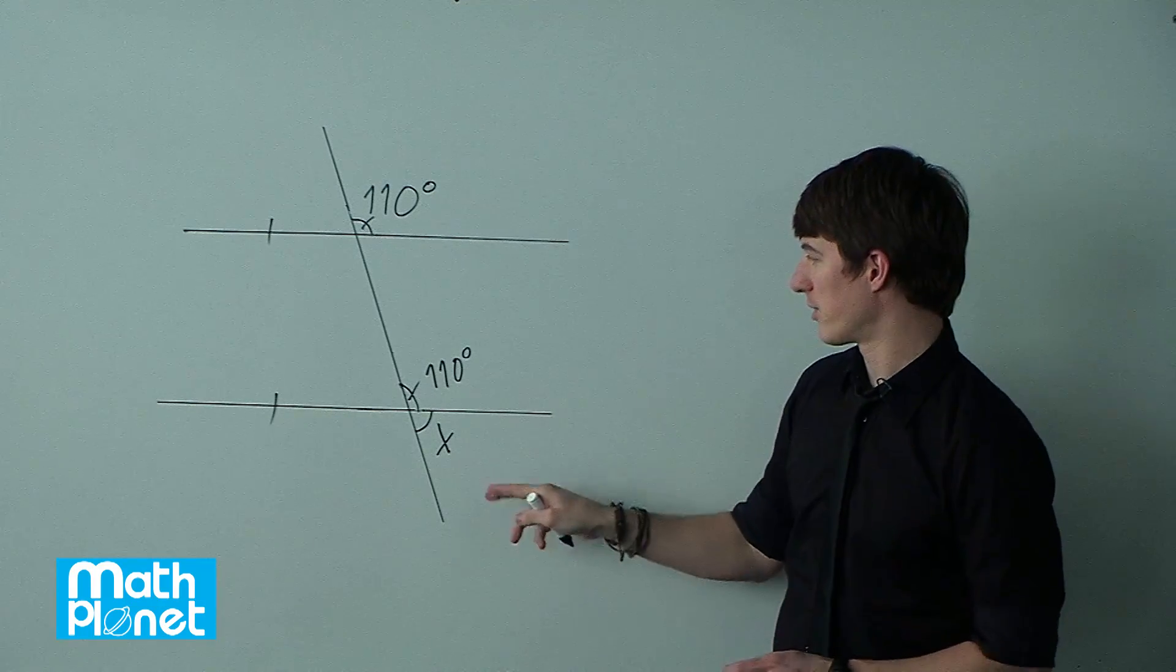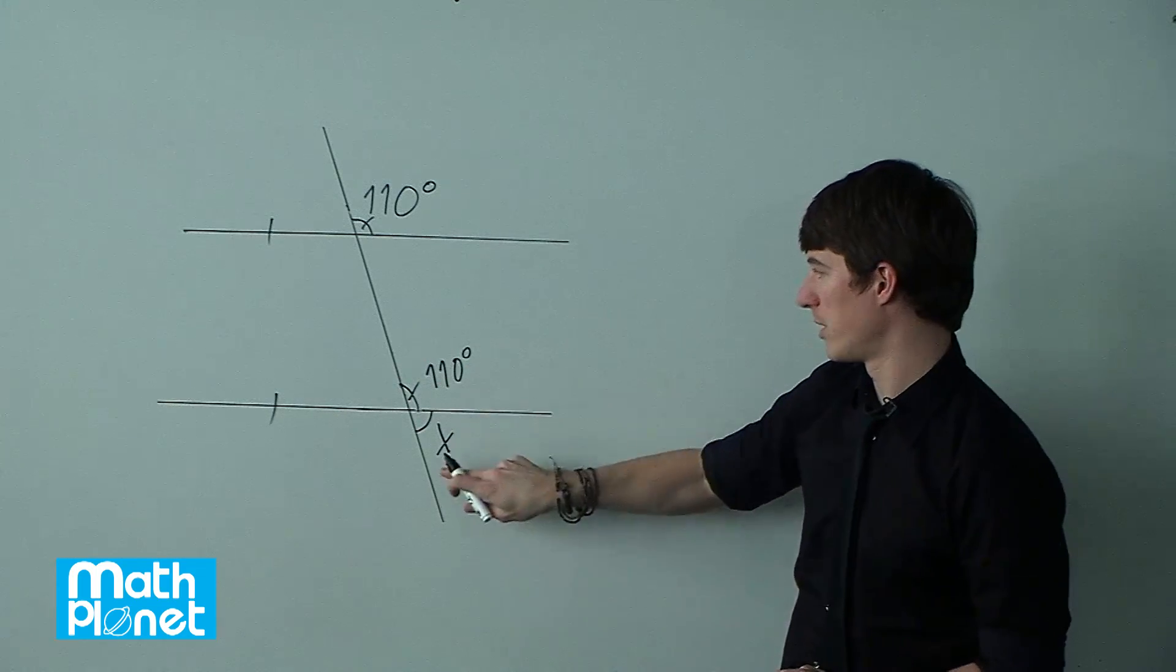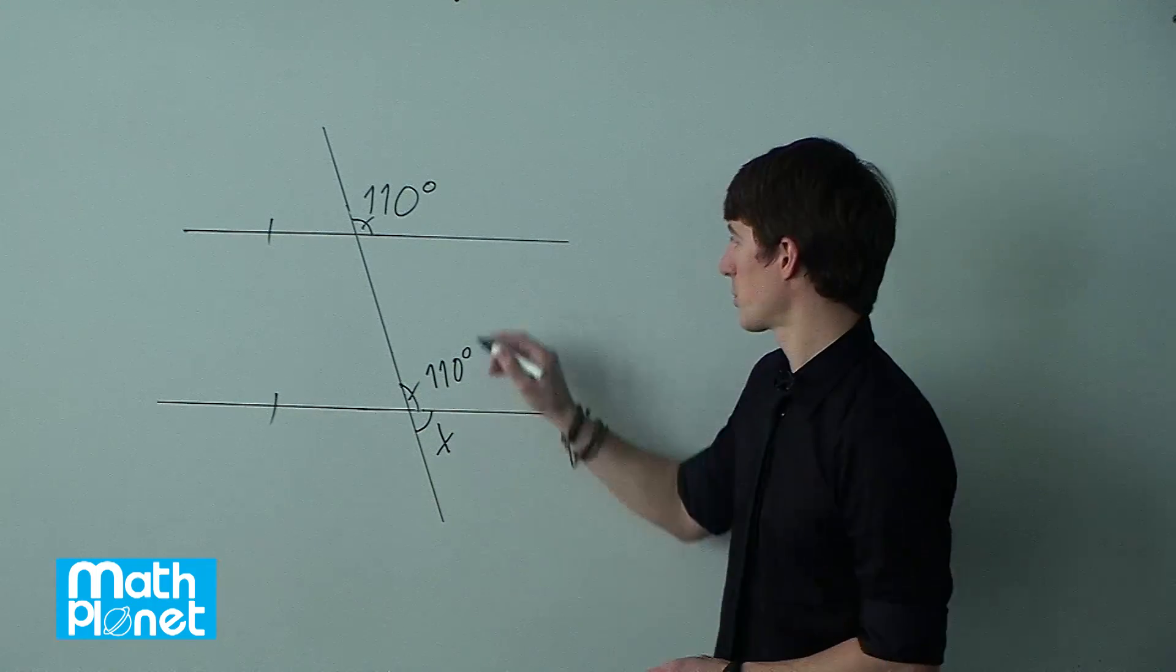The second thing we need to do is to see that if this is a straight line, then this total sum, 110 plus x, is going to be equal to 180.